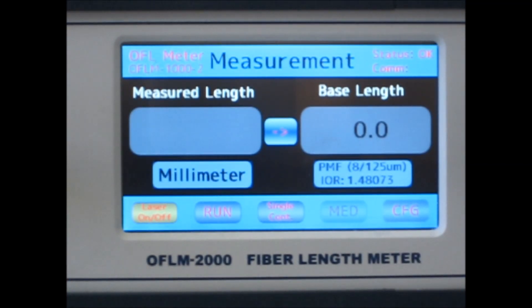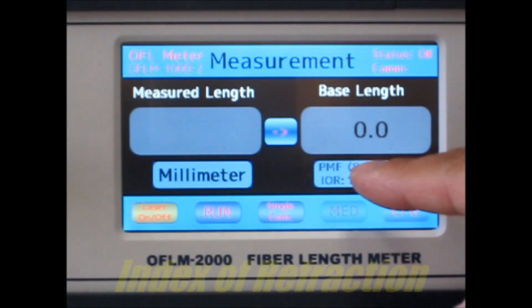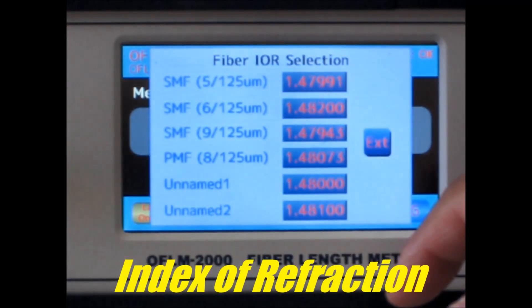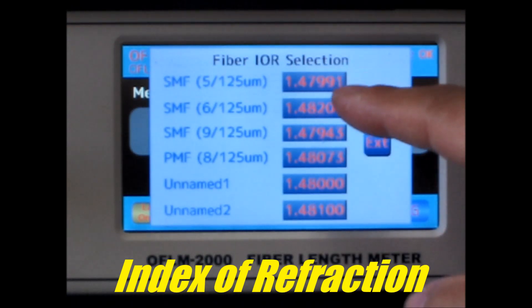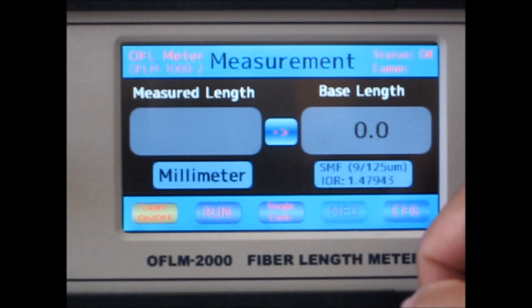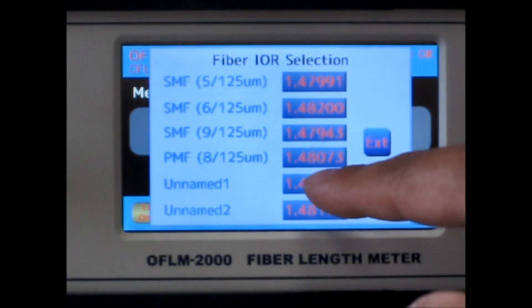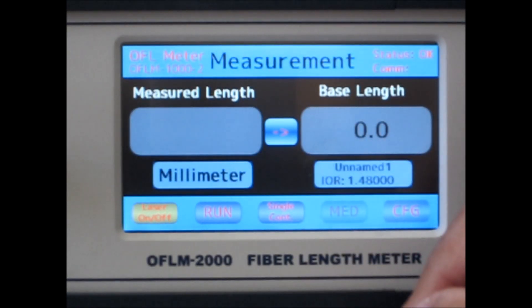For high precision measurements, the index of refraction of the fiber core needs to be taken into account. To change the index of refraction, push on the index of refraction and a list of the most common ones are shown. You may choose one from the list or use your custom value. Let's choose this one for now. You can see that the index of refraction has been changed. To use another preset value, tap on the index of refraction again and you can choose a different value.